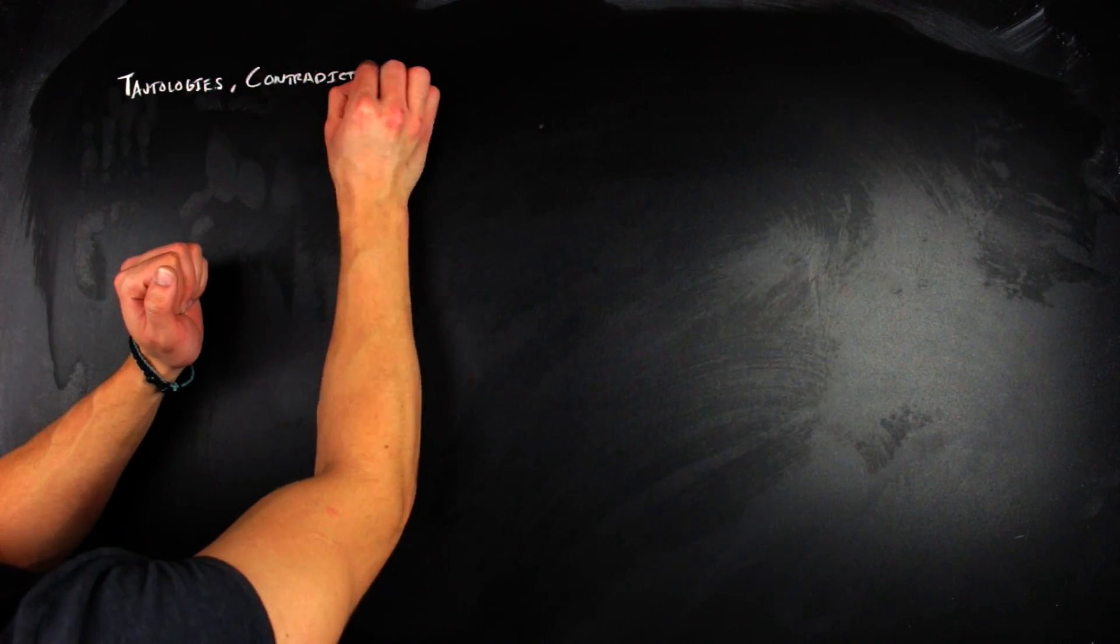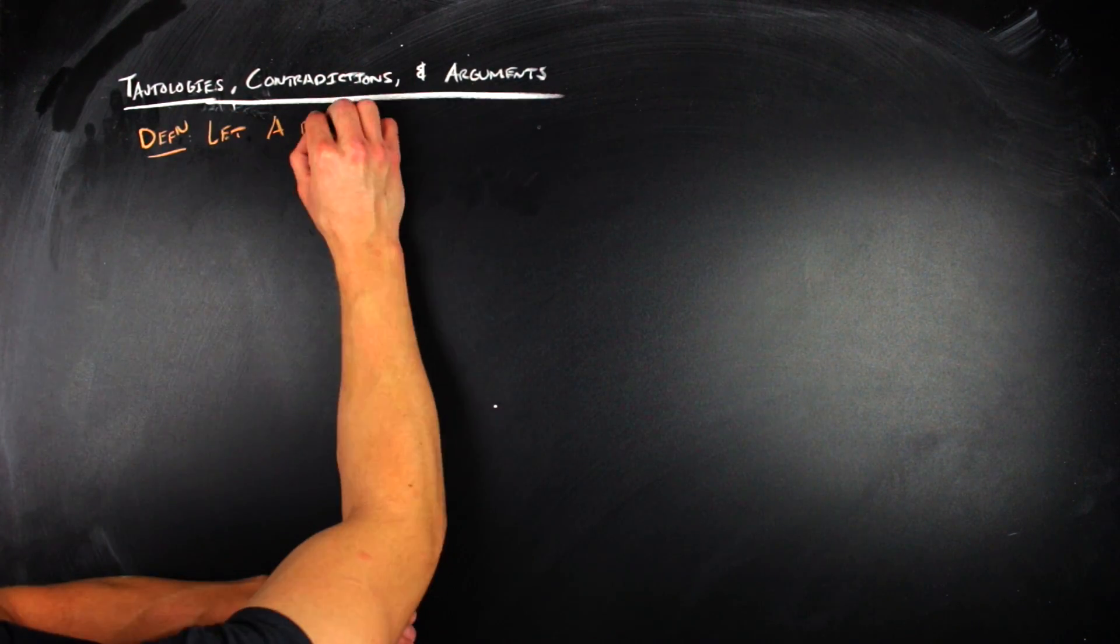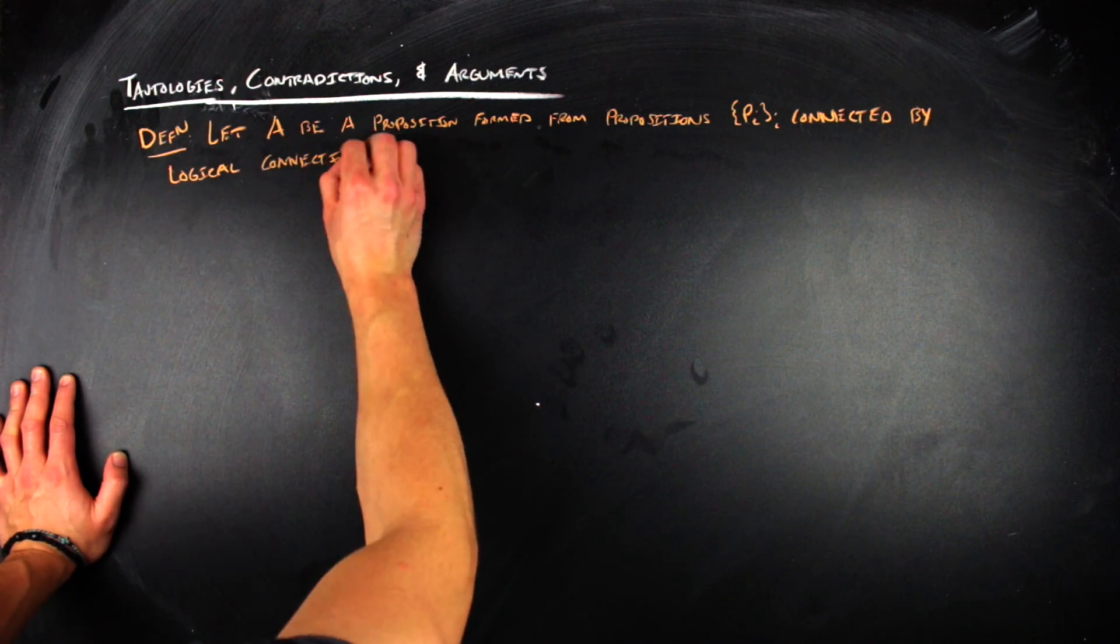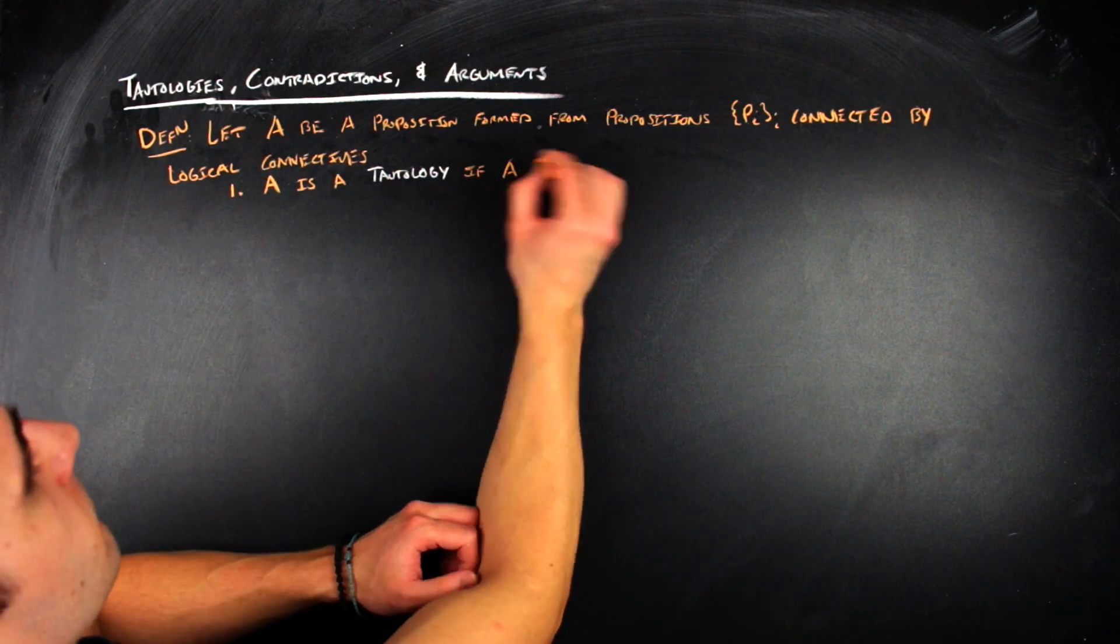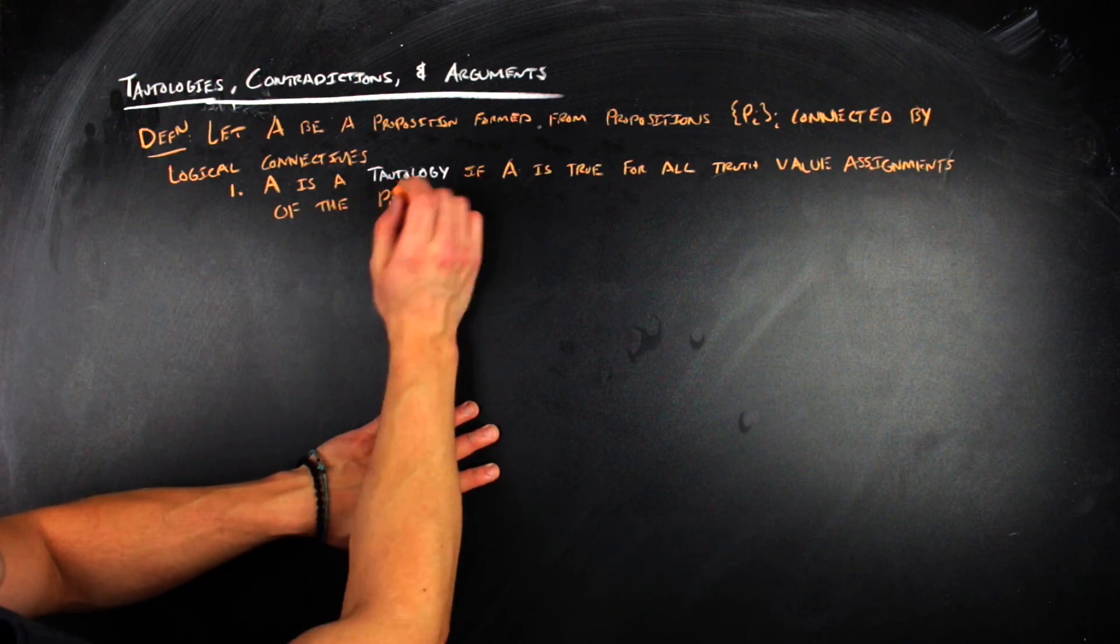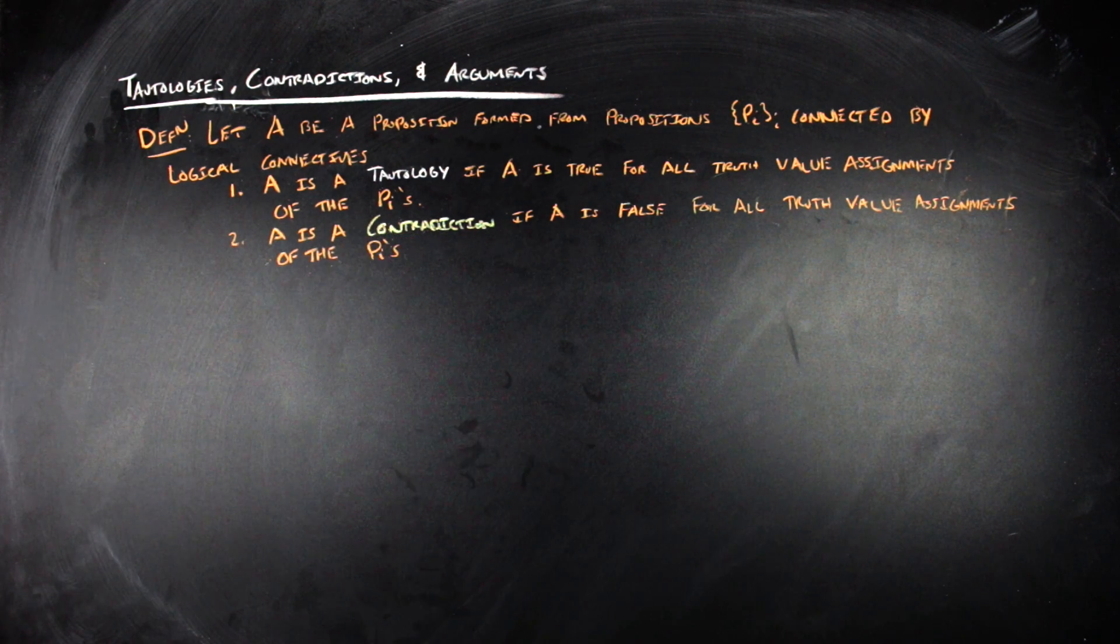So the last topic I want to go over in this particular video is that of tautologies, contradictions, and arguments. Because if you want to prove something, you have to be able to make a valid argument. So what does that mean? Well, first off, tautologies and contradictions are special types of propositions. So by definition, let A be a proposition formed from the propositions P_i indexed by i connected by logical connectives. Then one, A is a tautology if A is true for all assignments of truth values of the P_i's. And two, A is a contradiction if A is false for all assignments of the truth values of the P_i's.